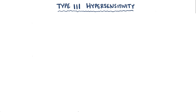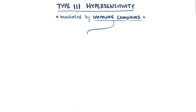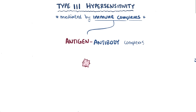Type 3 hypersensitivity reactions are mediated by immune complexes. Immune complexes, also known as antigen-antibody complexes, are made of two parts: the antigen and the antibody.